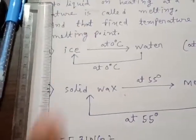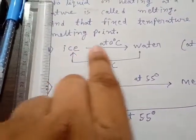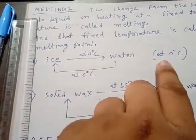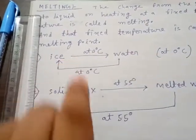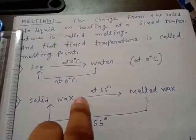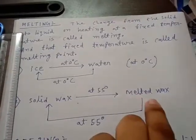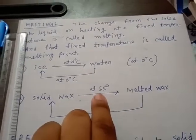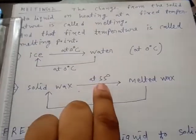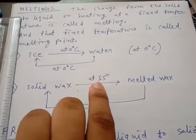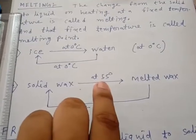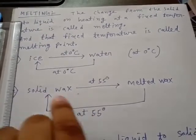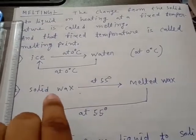Ice converts into water at 0 degrees, so 0 degrees is the melting point of ice. Solid wax converts into melted wax at 45 degrees centigrade, so 45 degrees centigrade is the melting point of solid wax.